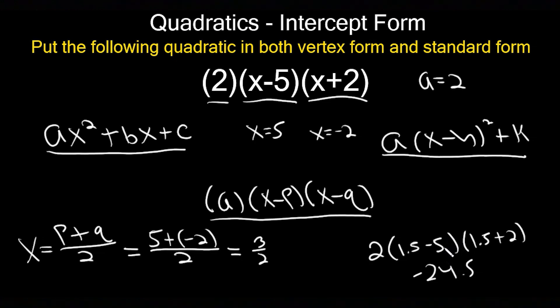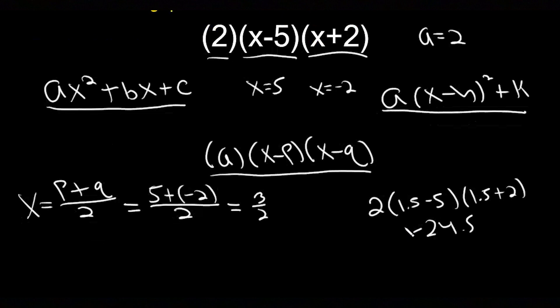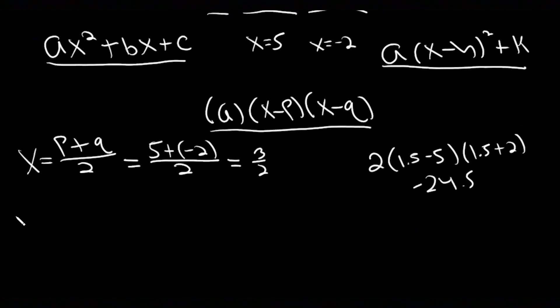Now I can put it in vertex form. I'll do this in a different color because now I'm done. I can say y equals, so my a value we already determined is 2. I'm going to put 2 here.